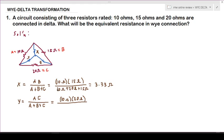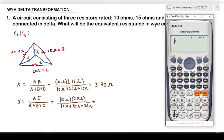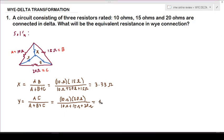We will use our calculator: 10 times 20 equals 200, divided by 10 plus 15 plus 20. So we have 4.44 ohms for Y.